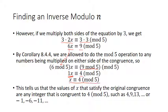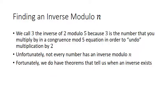I said that 4 and 9 were both solutions, and those match x congruent to 4 mod 5. This is interesting because we multiplied 2 by 3 and got 6, which is congruent to 1. This means that 3 is actually the inverse of 2 modulo 5 — the number that you multiply by in a congruence mod 5 equation in order to undo multiplication by 2, leaving you with a coefficient of 1. This is exactly the kind of thing we want for solving congruences, which we need in order to do encryption and decryption.